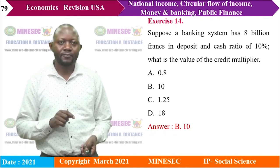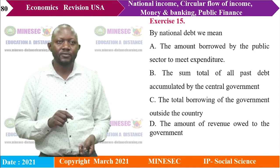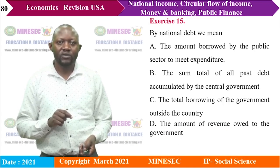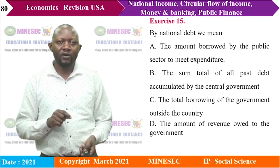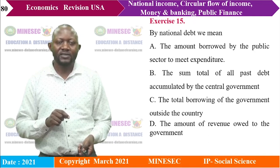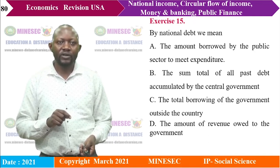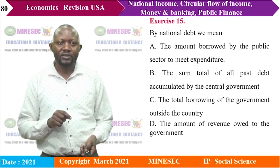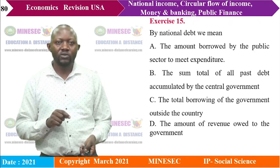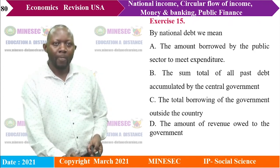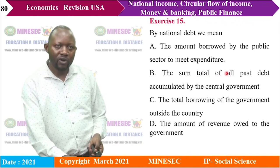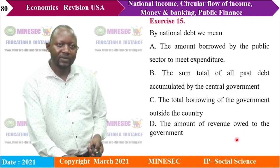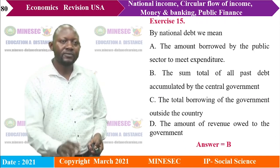Exercise 15: By national debt, we mean: A) the amount borrowed by the public sector to meet expenditure, B) the sum total of all past debt accumulated by the central government, C) total borrowing outside the country, D) the amount of revenue owed to the government. The right answer is B — the sum total of all past debts accumulated by the government.